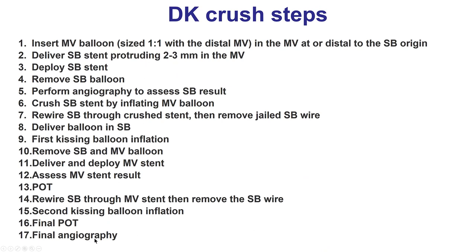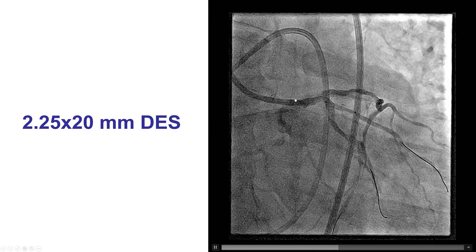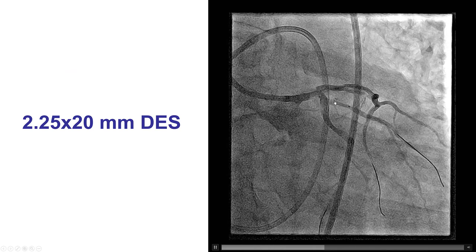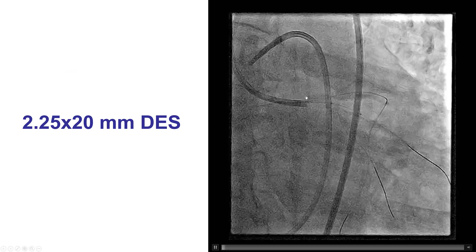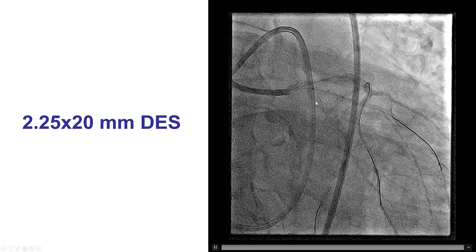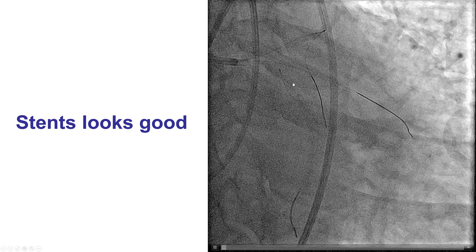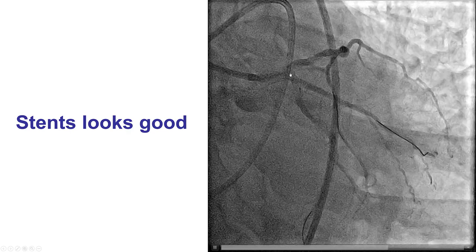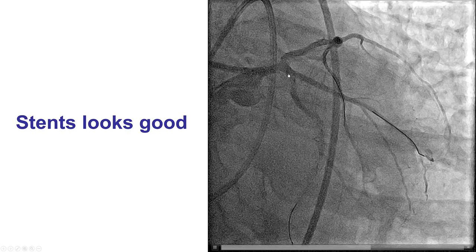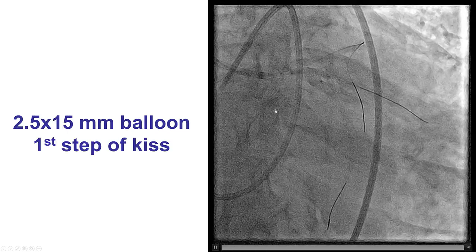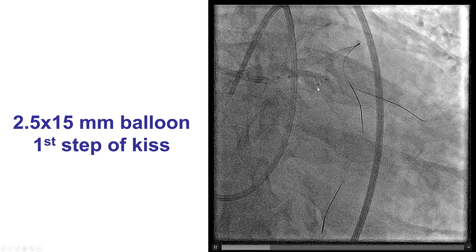These are the 17 steps of DK crush, described in separate videos. We decided to first treat the circumflex–obtuse marginal bifurcation, then the left main bifurcation. We pre-dilated and placed a stent from the obtuse marginal protruding into the circumflex. The stent was deployed and a good result was confirmed. A balloon placed from the left main into the circumflex was used to crush the stent, and then we rewired into the obtuse marginal branch and performed the first kissing balloon inflation.